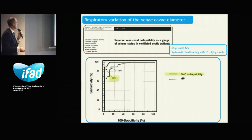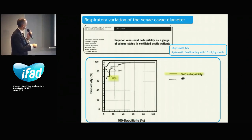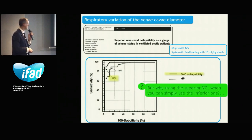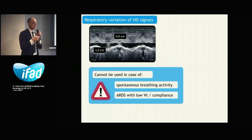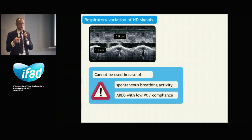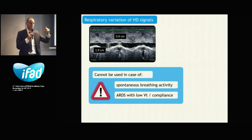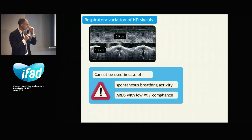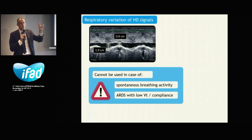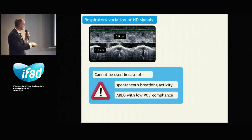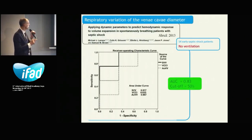The area under the ROC curve for SVC collapsibility was very good, comparable to pulse pressure variation. However, the same limitations apply: in case of spontaneous breathing, IVC diameter changes become irregular. Some recent studies suggest the IVC diameter can still be used with spontaneous breathing activity, but we should be very cautious and consider other tests in that setting.